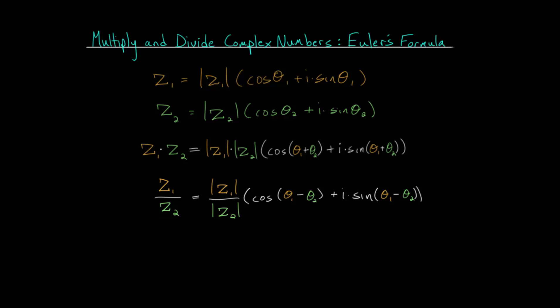We saw in the last video that this expression here is actually equal to E to the I times theta, where E is that 2.71828 and so on — it goes on forever, it's an irrational number like pi, and i is just the square root of minus one. This is known as Euler's formula: E to the I theta is equal to this expression, which essentially is the direction of our complex number on the complex plane.